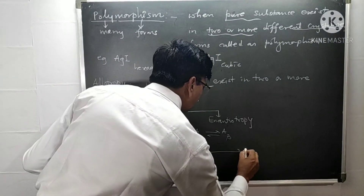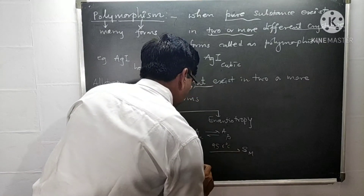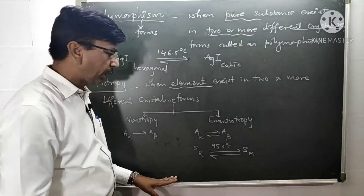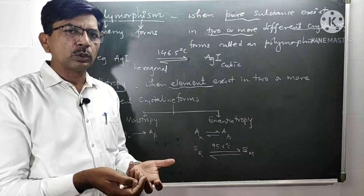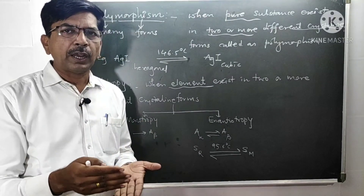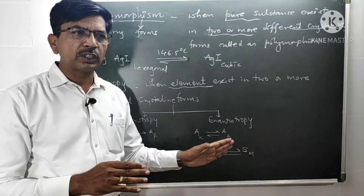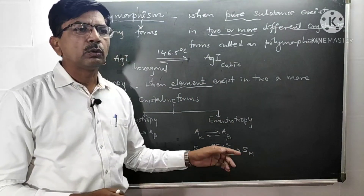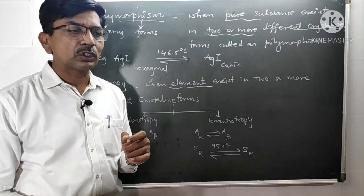The best example here is sulfur rhombic converting to sulfur monoclinic at 95.6 degrees Celsius. When we heat rhombic sulfur, at 95.6 degrees Celsius it starts converting to the monoclinic form, and the temperature remains constant until all the rhombic sulfur is converted. Once fully converted to monoclinic, the temperature increases again. Both are solids existing in two different crystalline forms — the polymorphs are thermodynamically stable.